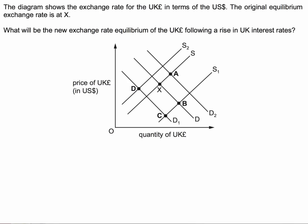The diagram shows the exchange rate for the pound in terms of US dollars, and the original equilibrium is at exchange rate X. What will be the new exchange rate equilibrium of the pound following a rise in UK interest rates?